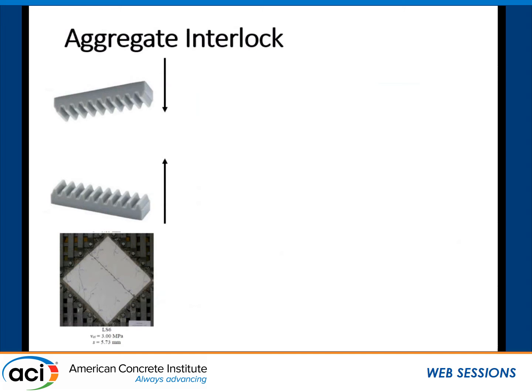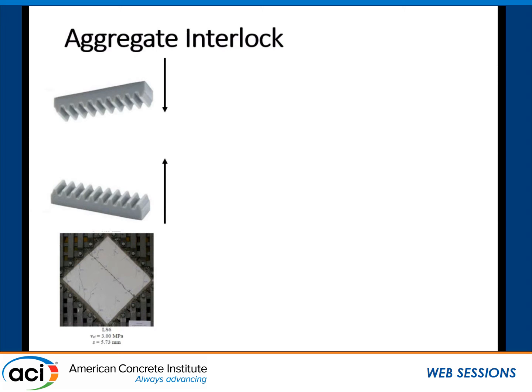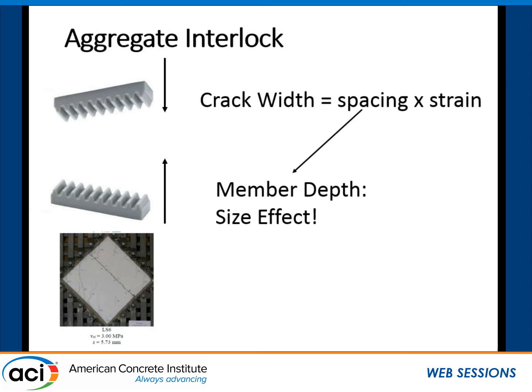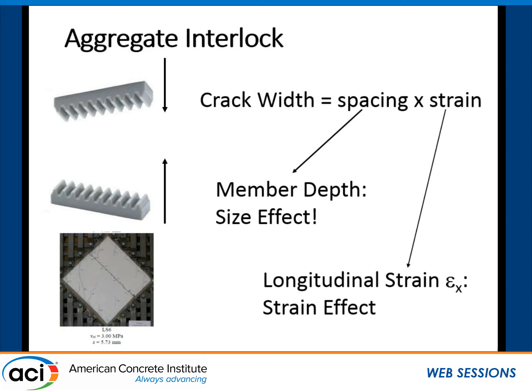Aggregate interlock can be understood through a Lego analogy: two pieces squeezed together and slid resist because they are geared together — no cohesive stresses needed. A specimen resisting 50,000 pounds across a crack with no reinforcement and no dowel action demonstrates this is reliable and repeatable. Aggregate interlock relates to crack width: wider cracks are easier to slide. Crack width equals crack spacing multiplied by strain perpendicular to the crack. Crack spacing relates to member depth, giving the size effect — larger depth means wider cracks and lower shear resistance. The strain relates to longitudinal strain epsilon-x, giving the strain effect.